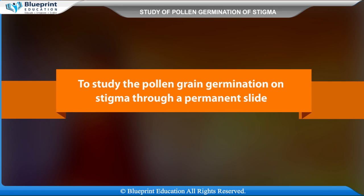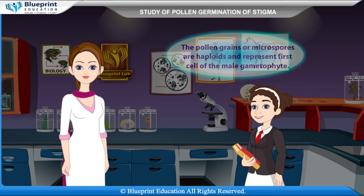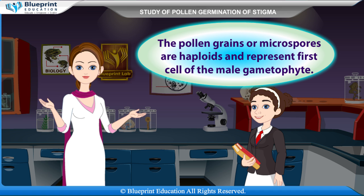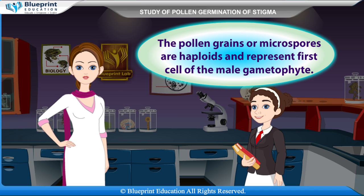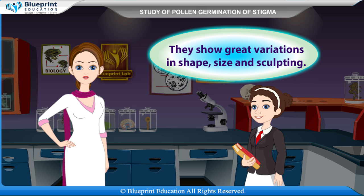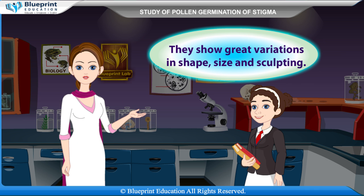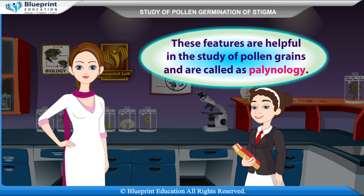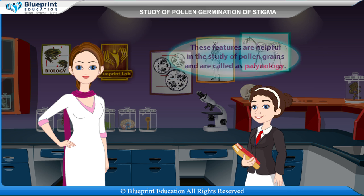To study the pollen grain germination on stigma through a permanent slide. The pollen grains or microspores are haploids and represent the first cell of the male gametophyte. They show great variations in shape, size, and sculpting. These features are helpful in the study of pollen grains and are called palynology.